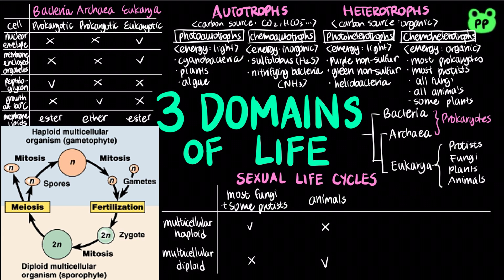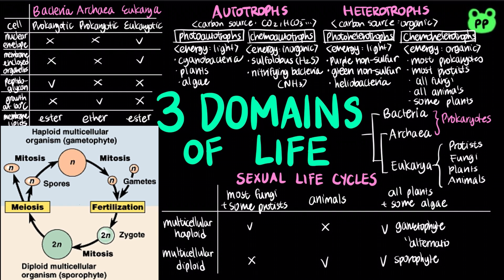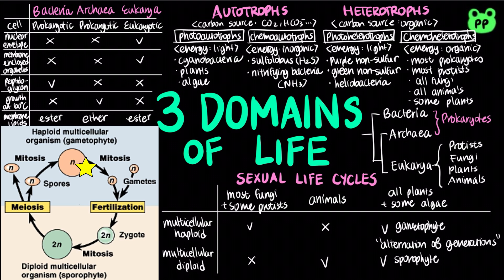Lastly, plants and some algae exhibit an alternation of generations. Their life cycles include both a diploid and a haploid multicellular stage. The diploid organism called a sporophyte makes haploid spores by meiosis. Each spore grows by mitosis into a haploid organism called a gametophyte. A gametophyte makes haploid gametes by mitosis, and fertilization of gametes results in a diploid sporophyte. Then the life cycle starts over again.